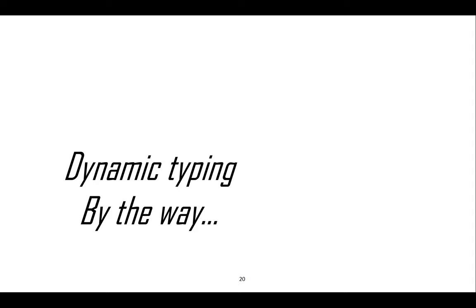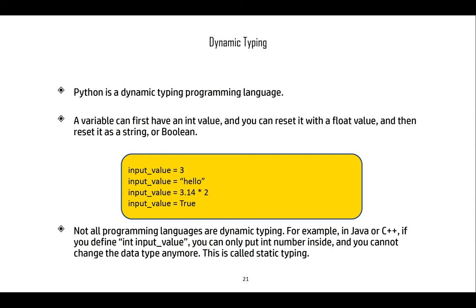Python is a dynamic typing programming language — it doesn't care what types of values you put in variables. Variables can hold any type: float, string, integer, boolean. You won't be warned about type changes, so if you need to verify data types you'll need to use special functions. Not all languages have dynamic typing — Java, C++, and C use static typing, where you must define the variable type explicitly.